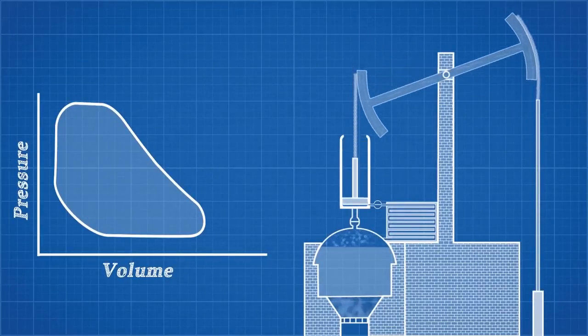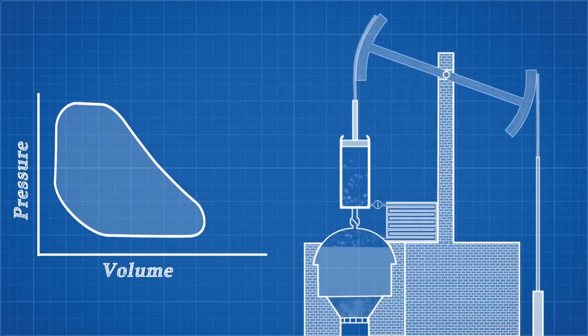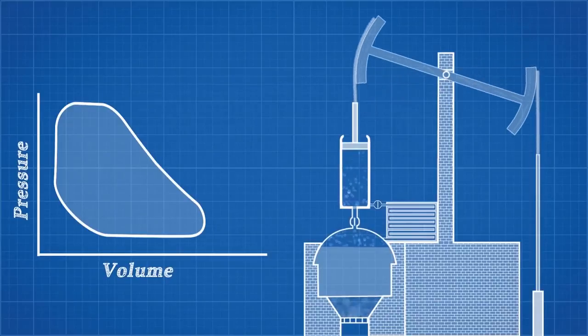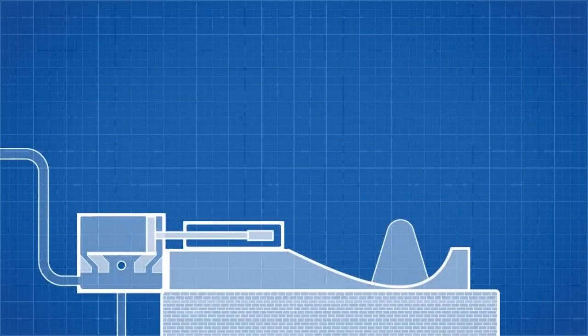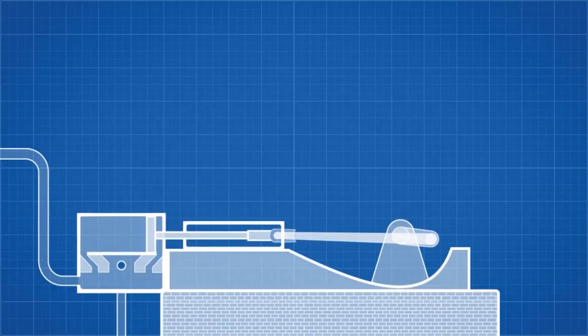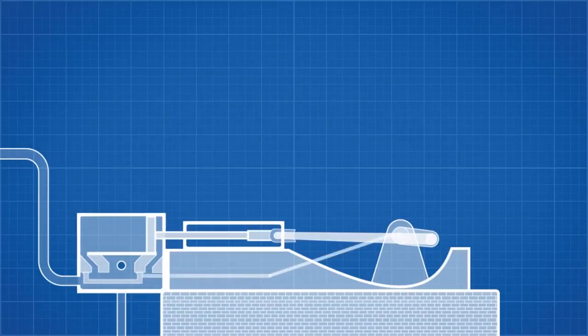But this reciprocating motion isn't much use for most applications, especially with this flexible chain connecting them. What we need is rotational motion, which requires a different setup. To convert this linear motion to rotational motion, we need a crankshaft and connecting rod. We have turned this piston cylinder on its side, so atmospheric pressure can no longer force the piston back down, so we need to use steam on the return stroke. This requires a control valve to control when the steam enters and leaves each side of the cylinder.